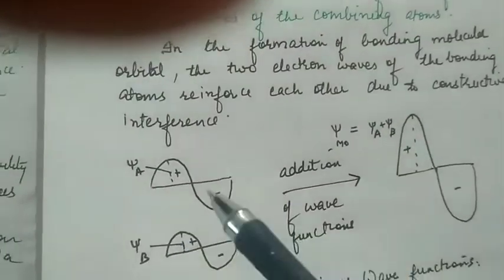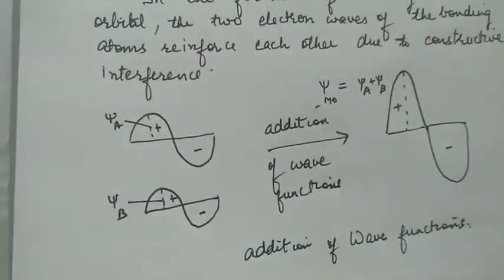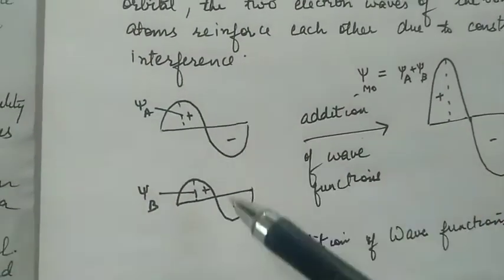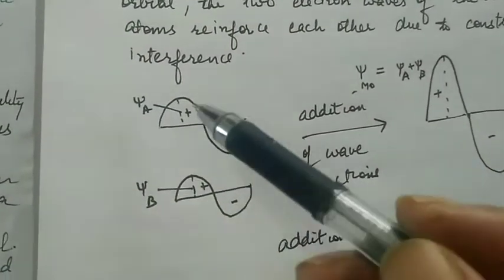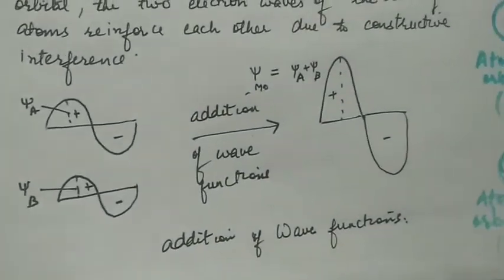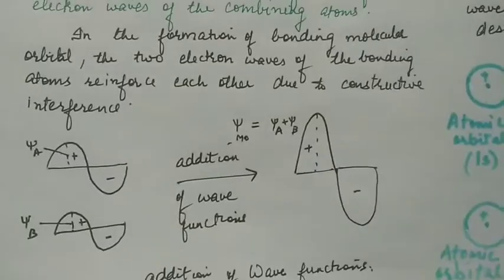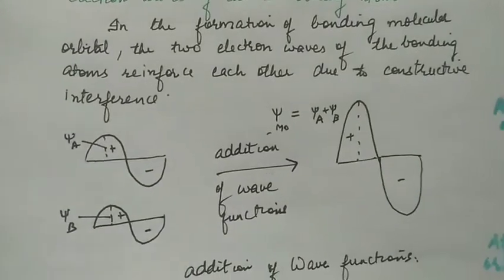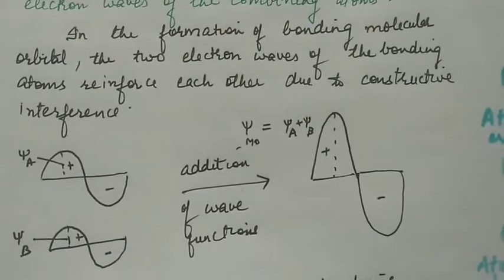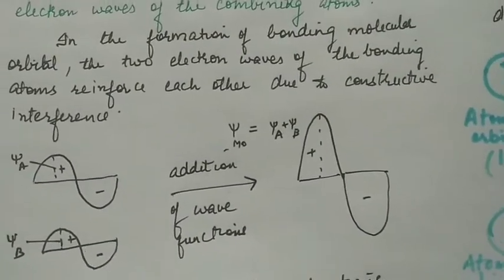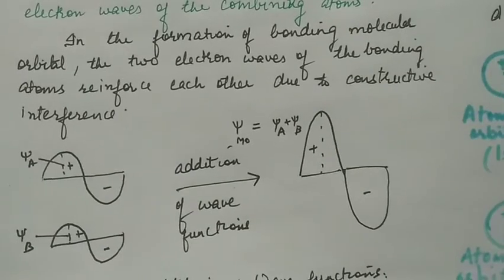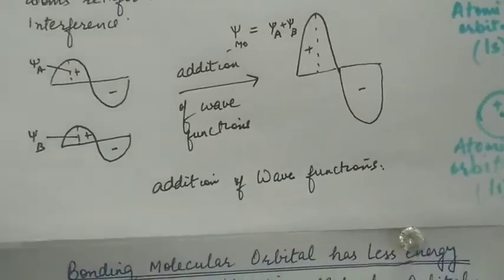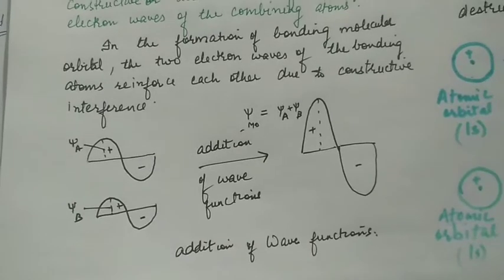In constructive interference, the two wave functions that combine are combining with the same signs on the same side. As a result, the resulting wave has an amplitude bigger than these wave functions, and the wave function of the molecular orbital is the sum of the wave functions of the atomic orbitals. This is addition of wave functions.